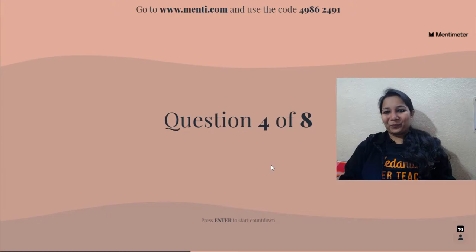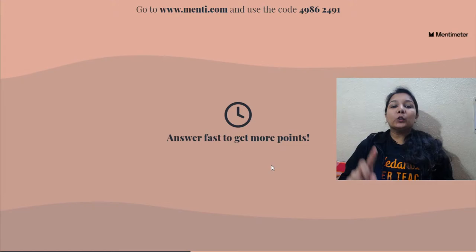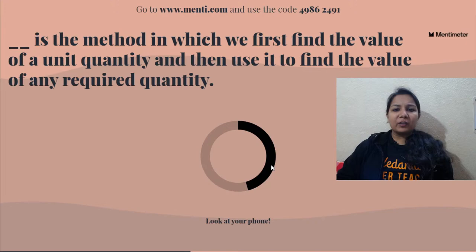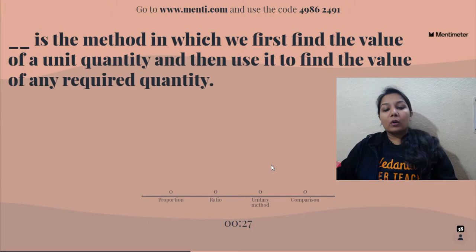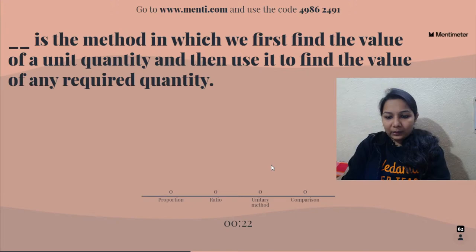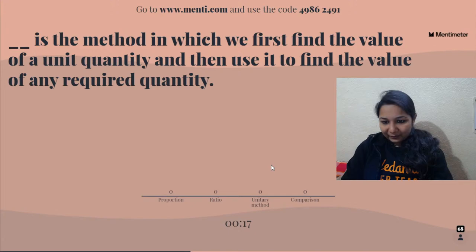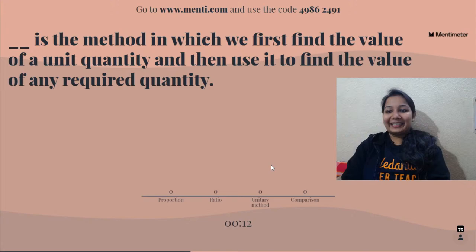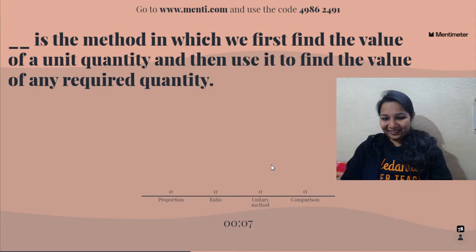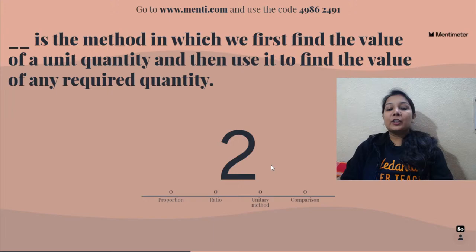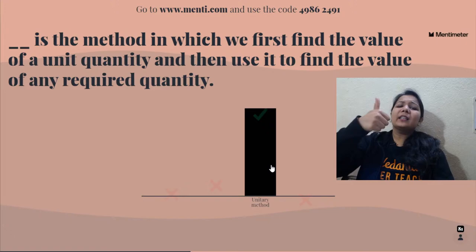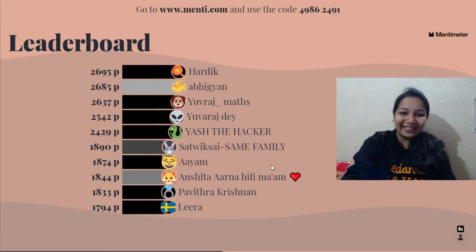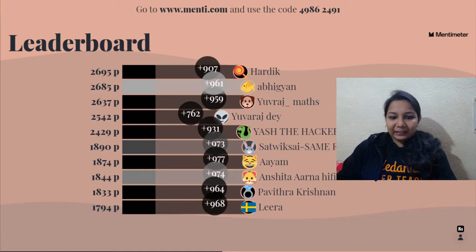Question four: 'Blank is the method in which we first find the value of a unit quantity and then for any required quantity — what is this method called?' The correct answer is unitary method. This is the concept we discussed today. Well done to Ardek, Abhigyan, Yuvraj, Yash, Satvik, Sai, Anshita, Pavitra, and Lira.